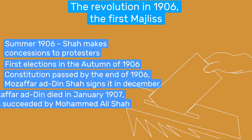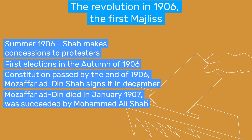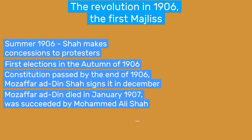Mozaffar ad-Din Shah died a few weeks after the constitution was passed, in January 1907. He was succeeded by his son Muhammad Ali Shah. Unlike his father, Muhammad Ali was in his prime and looking to restore the power that had been given away by his father back to the monarchy.